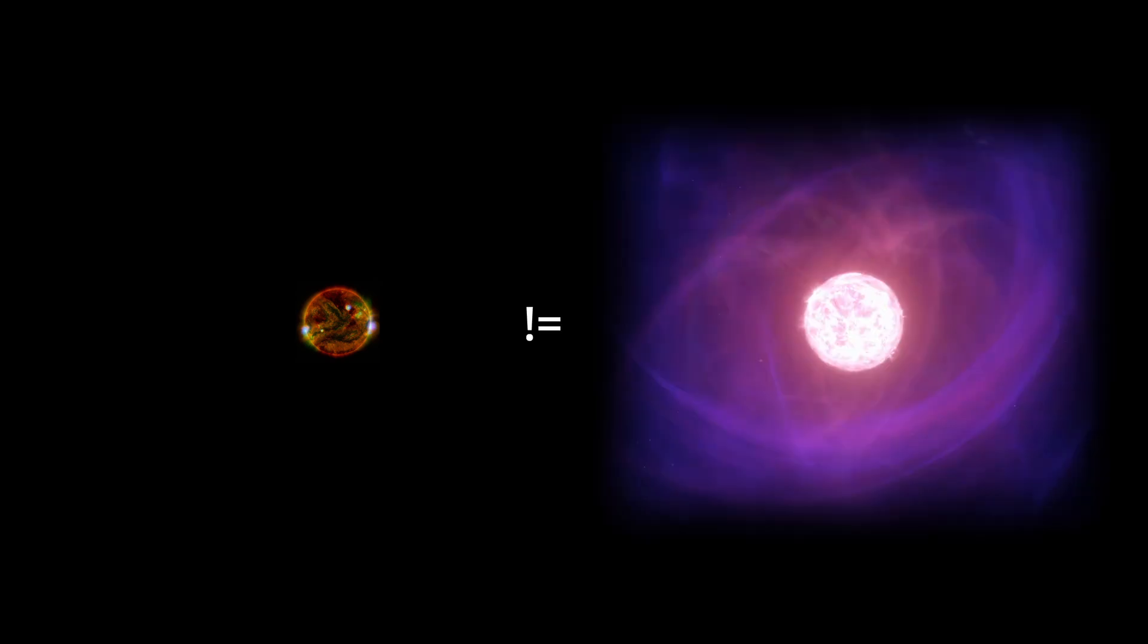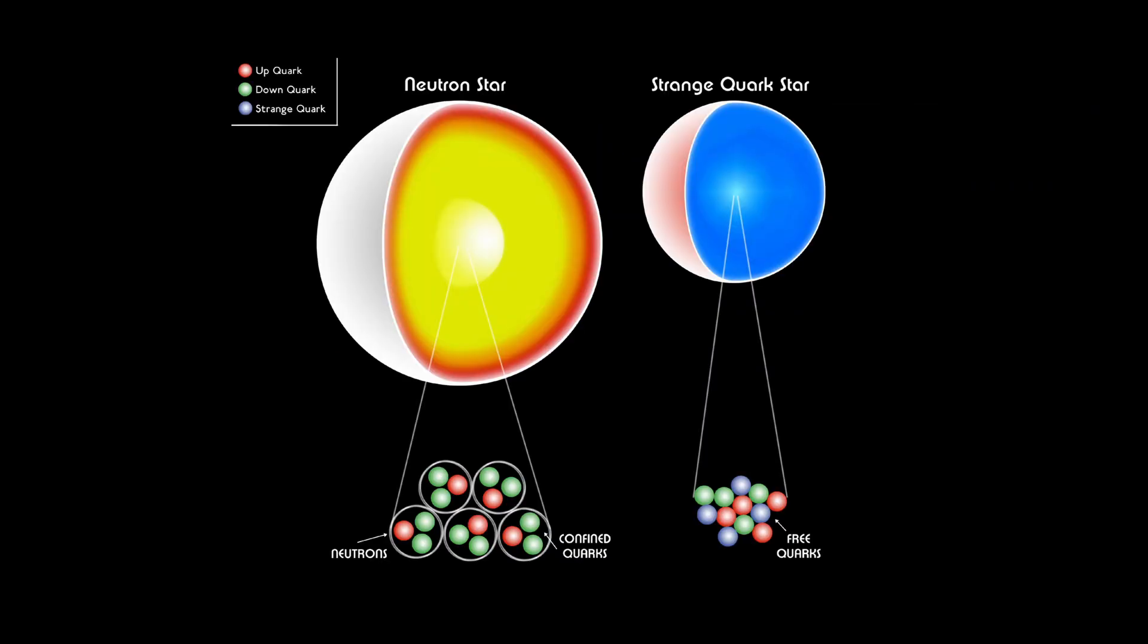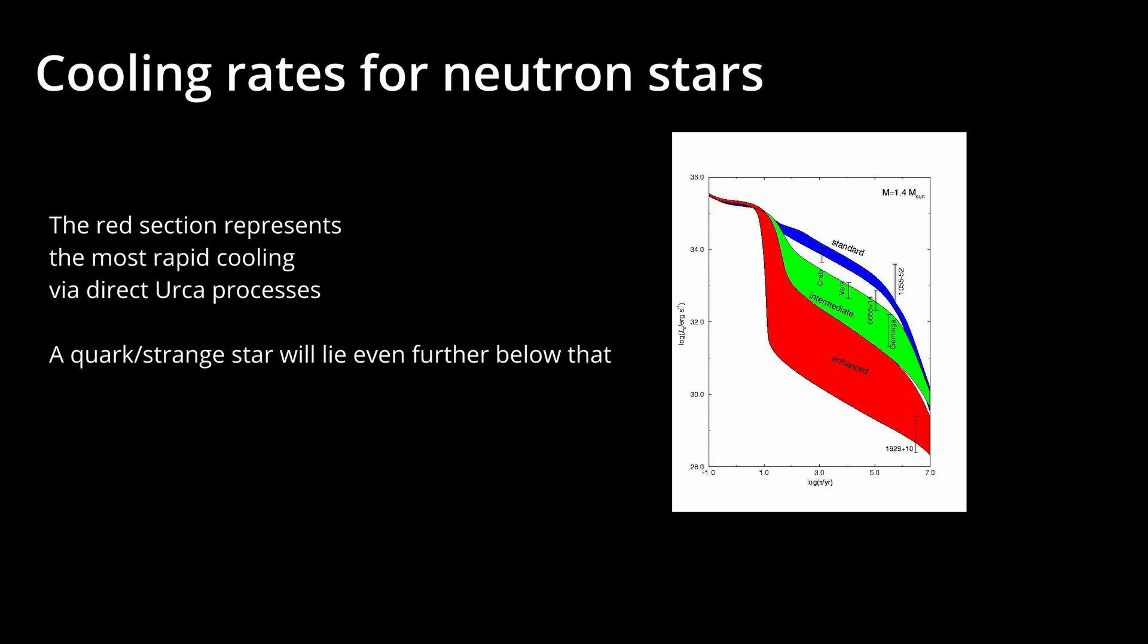As you might expect, strange stars would be far more compact than neutron stars due to the ability of quarks to be closer together than neutrons, and therefore make the star appear smaller in radius than the mass would indicate for a neutron star. Due to the different surface composition, it would also have distinct thermal emission signatures.